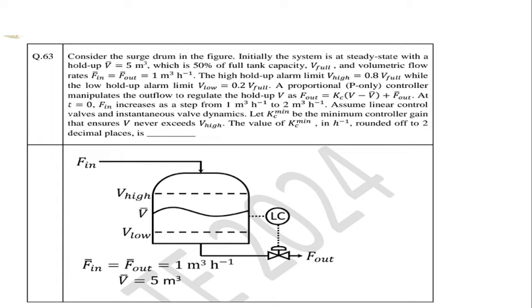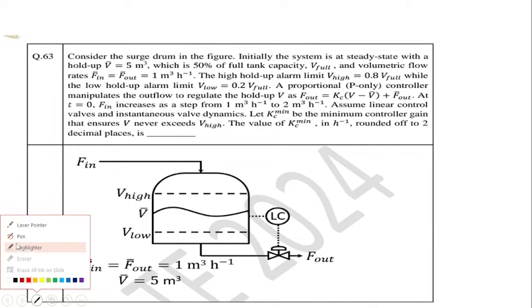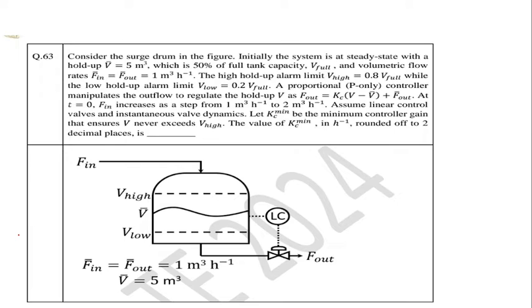Hello guys. In the series of solving GATE 2024 questions, we have another question from process dynamics and control. If you see this question, consider you have a surge tank and initially the system is at a steady state with holdup V-bar which is 5 meter cube. So V-bar is the steady state volume — we should write the steady state volume as 5 meter cube.